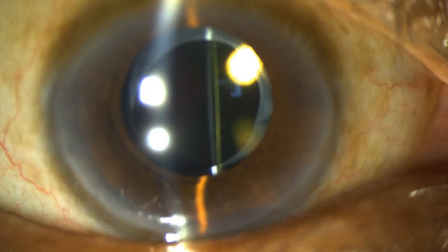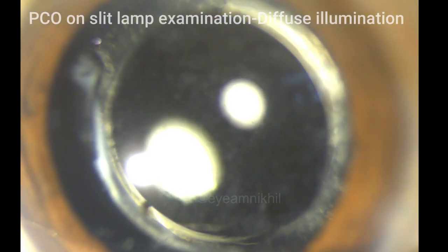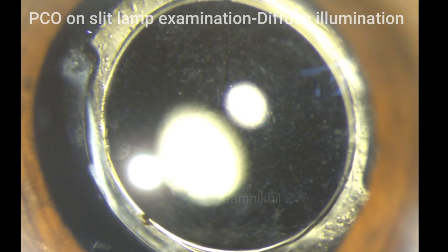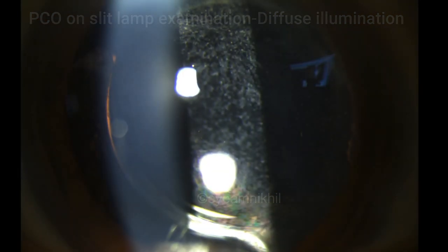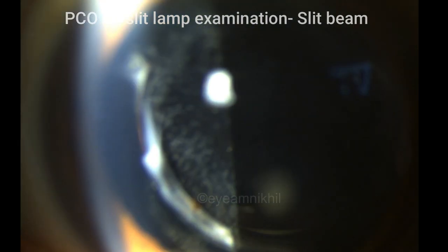This is how a clear lens appears on slit lamp examination, and this is how PCO appears on slit lamp examination. This is in diffuse illumination. You can see the round margin of capsulorhexis. Findings become more prominent on a slit beam. Note how the posterior capsule is opaque.